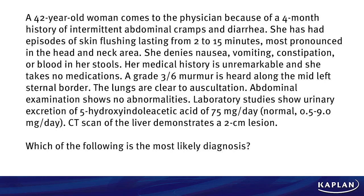A 42-year-old woman comes to the physician because of a 4-month history of intermittent abdominal cramps and diarrhea. She has had episodes of skin flushing lasting from 2 to 15 minutes, most pronounced in the head and neck areas. She denies nausea, vomiting, constipation, or blood in stools. Her medical history is unremarkable, and she takes no medications.